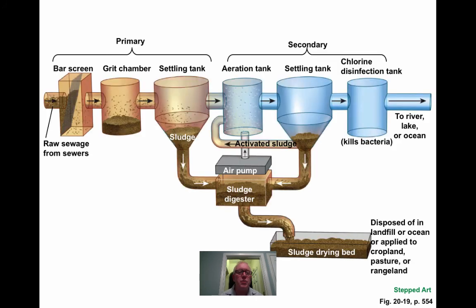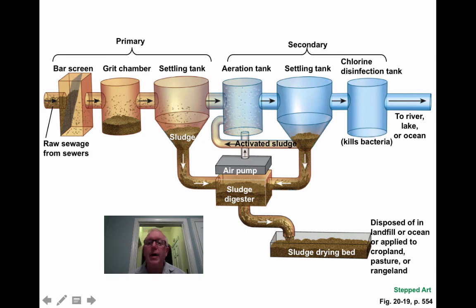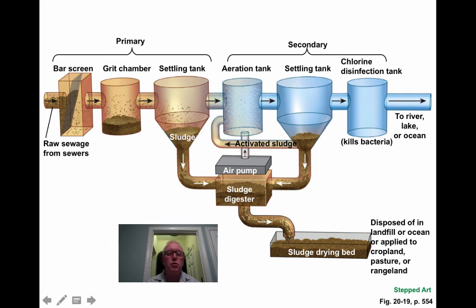The main stages of wastewater treatment include: a screen to remove large debris (primary/physical), then an aeration tank where bacteria break down organic matter (secondary/biological), followed by a sludge drying bed for collected solids. Finally, chlorination and sometimes UV radiation disinfect the water before it is released to a river, lake, or ocean.